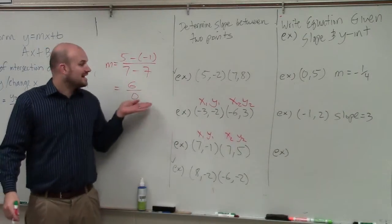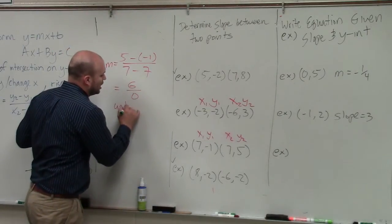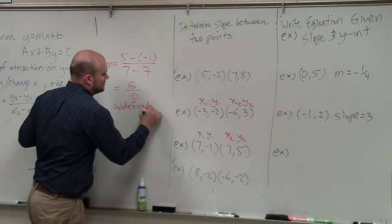However, we have a problem. We cannot divide 0 into 6. So this would be what we call an undefined slope.